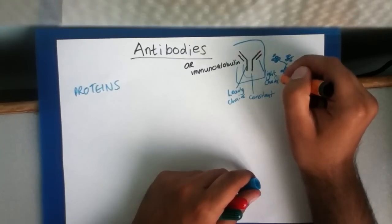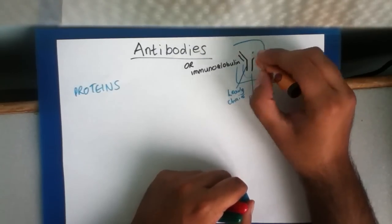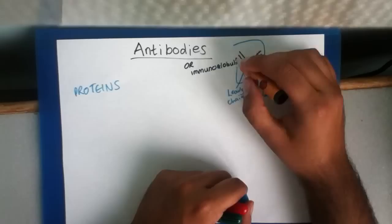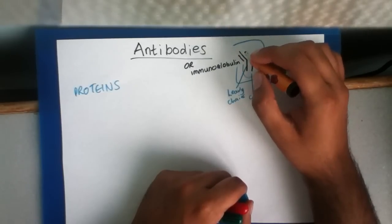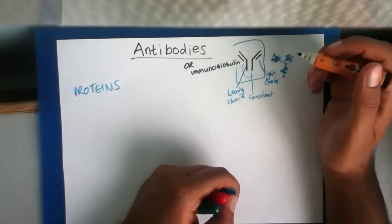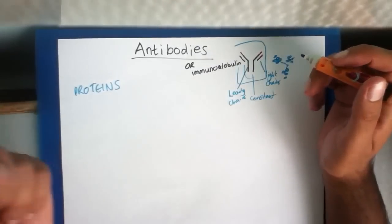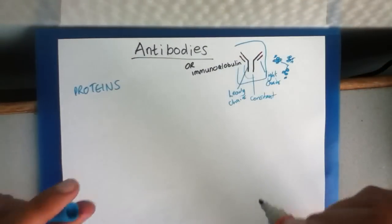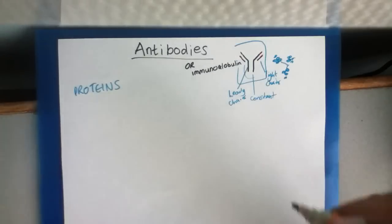Now, these regions here are the antigen binding sites. This is where the antigen will bind to the antibody. But we don't really understand, at the moment, so far as the video has gone, what do antibodies do. So let's discuss this now.